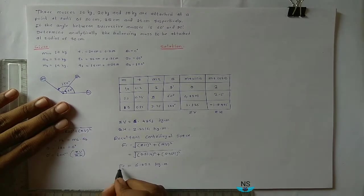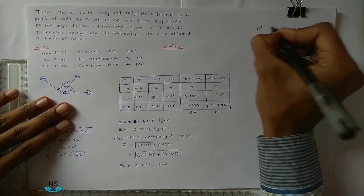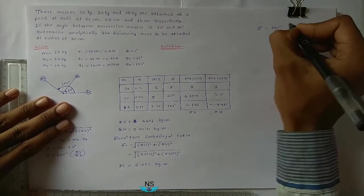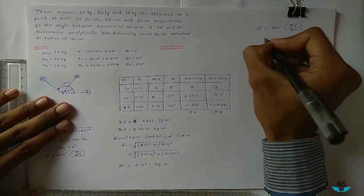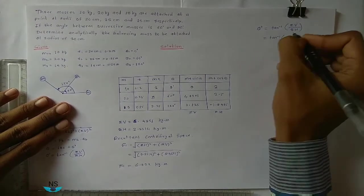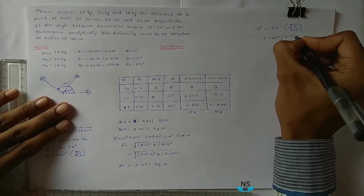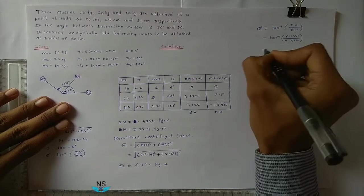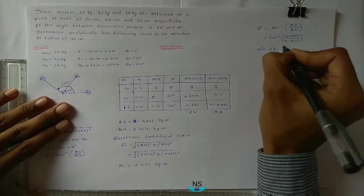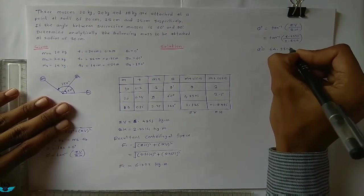Position of this centrifugal force from positive x-axis: theta dash is equal to tan inverse summation V divided by summation H. That is equal to tan inverse 5.4551 divided by 2.5514. So theta dash becomes 64.934 degrees.